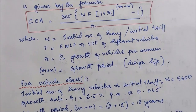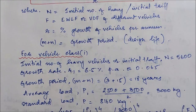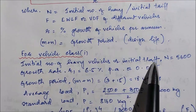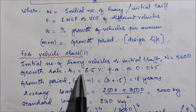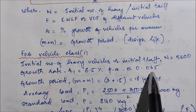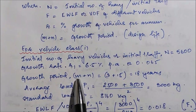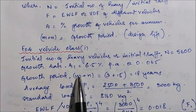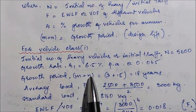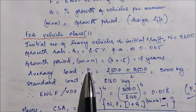In this problem we have two classes of vehicles. For vehicle class 1, the initial number of heavy vehicles N1 is 5600, and the growth rate R1 is 6.5 percent per annum, or 0.065 in decimal. The growth period is common for both classes. With a construction delay of 3 years and a design life of 15 years, the total growth period is m + n = 3 + 15 = 18 years.